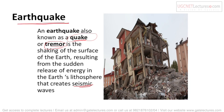The first natural disaster is earthquake. As the word suggests, 'earth' means dharti and 'quake' means to shake. Earthquake is also called a tremor, meaning kapna (to tremble). Basically, an earthquake is when the ground shakes suddenly, releasing energy from the earth's lithosphere that creates seismic waves, causing a jolt on the earth's surface.